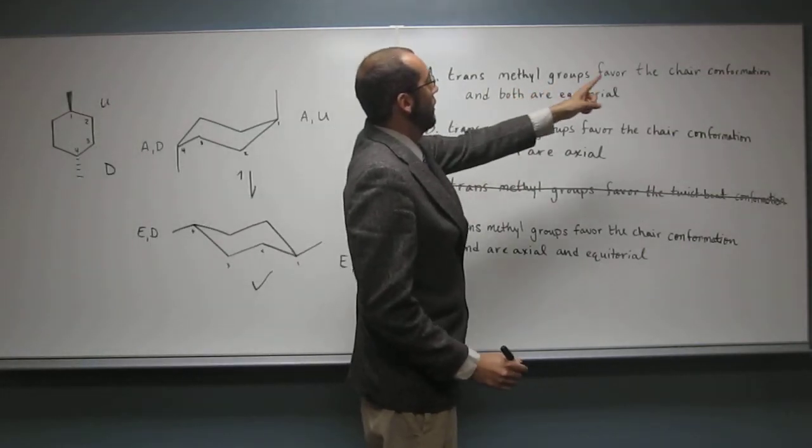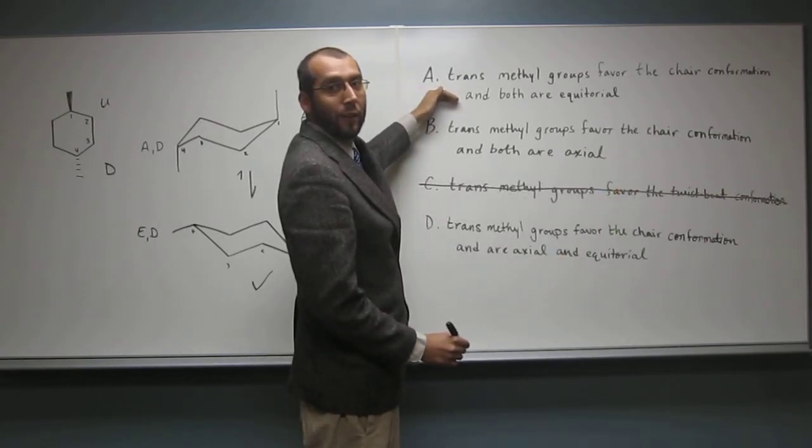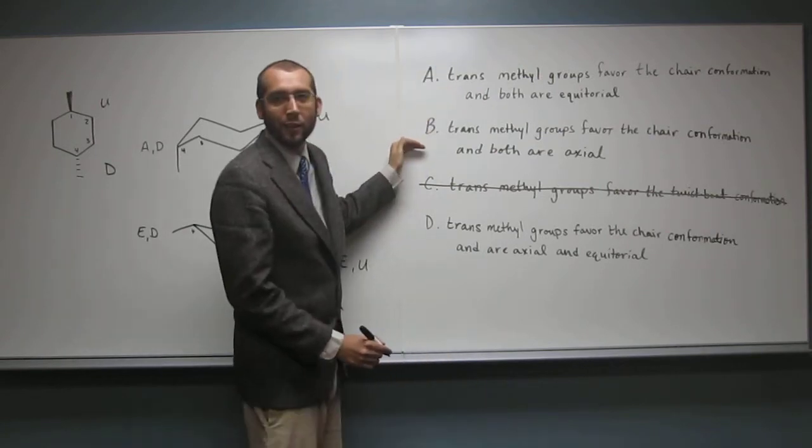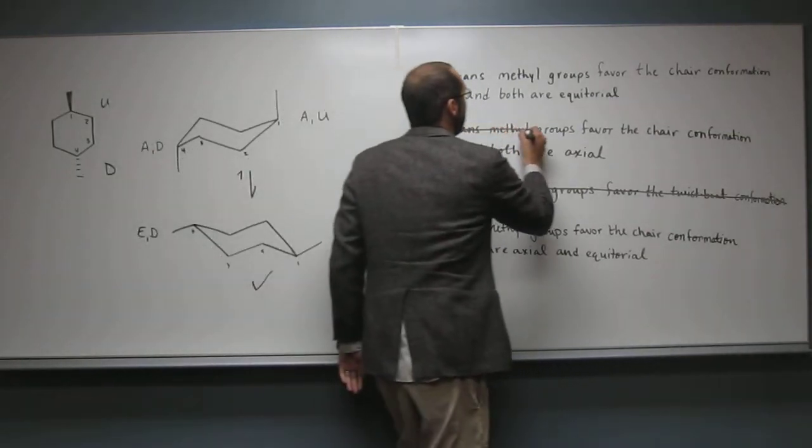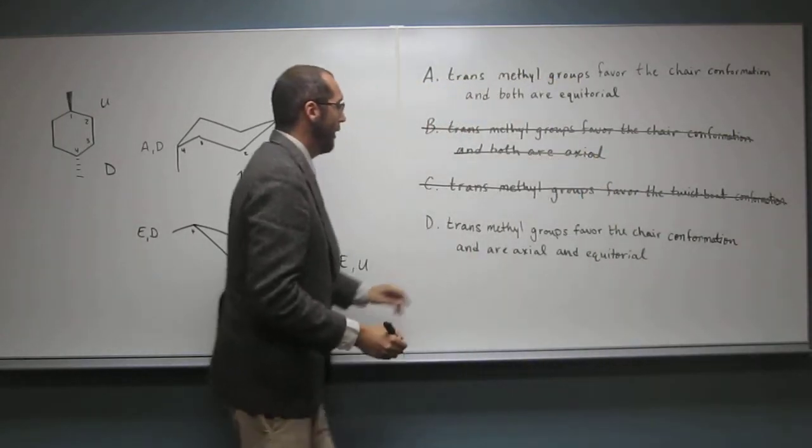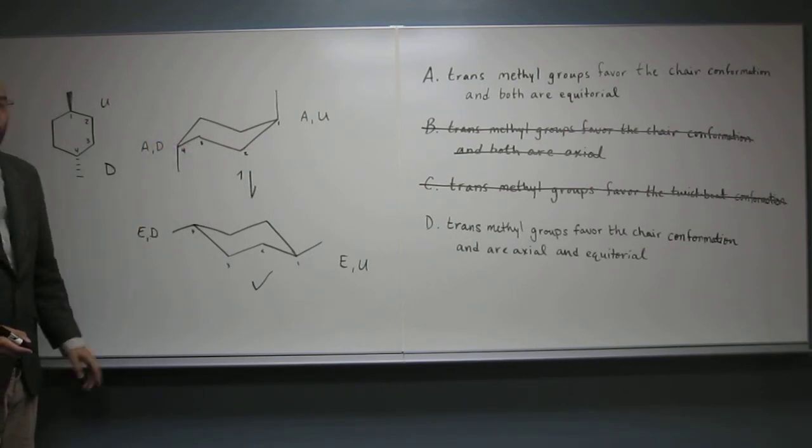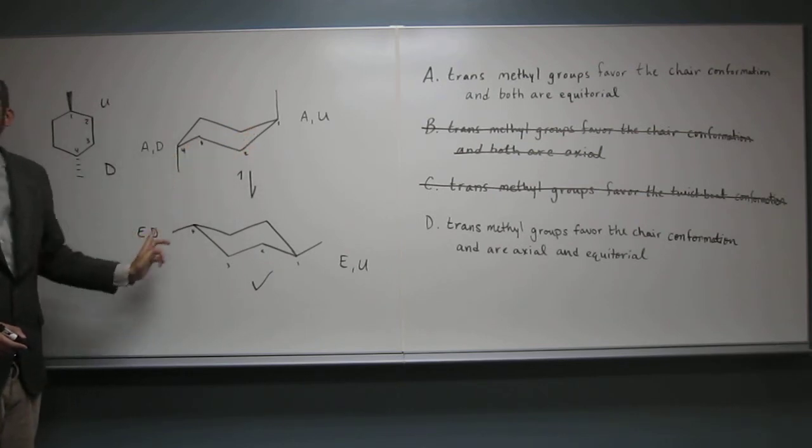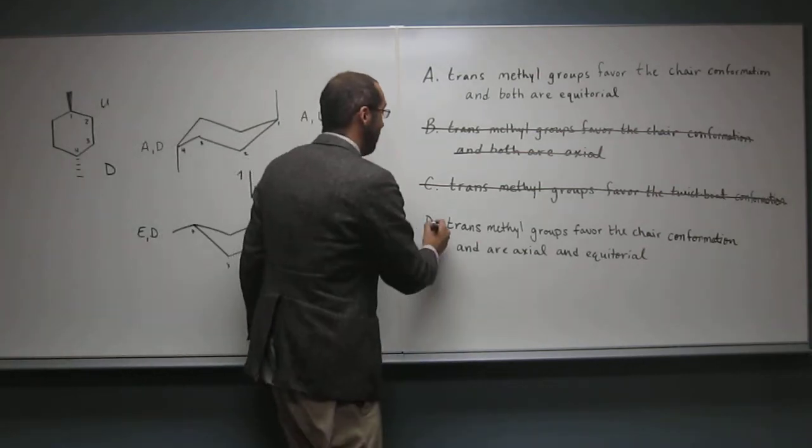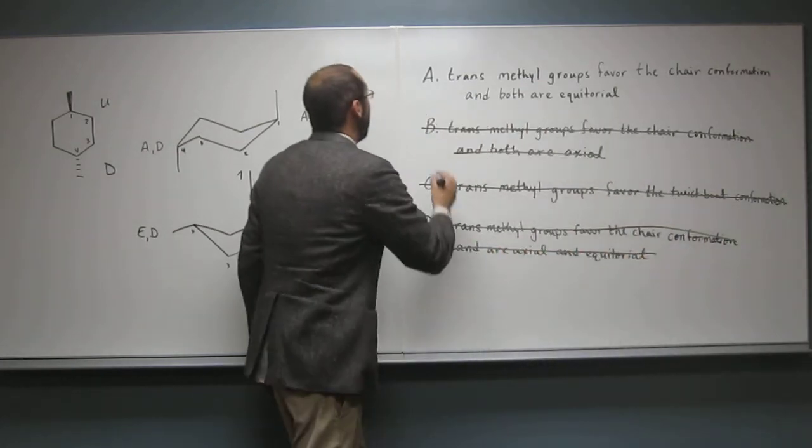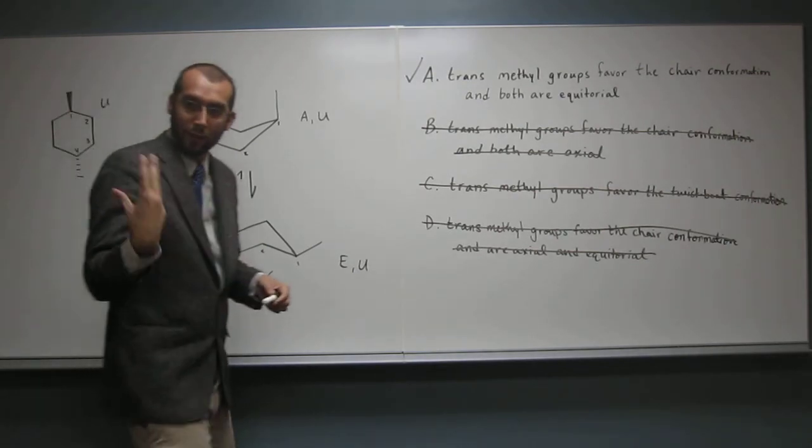So, trans-methyl groups favor the chair conformation. We got that. Both are equatorial. Is that the right answer? Yes. Yeah, that's the right answer. Well, let's just cancel out the other ones. Both are axial. Is that more favored? No, we already know they're not more favored, so let's cancel that one. And if you've got trans-1,4, can one be axial and one be equatorial? Look at what we've done here. They're either both axial or both equatorial, so they can't even be like this, right? One can't be axial and the other equatorial. So the right answer is that one. Are there any questions on this one? No questions. Okay, does it make sense? Yes. Okay, wonderful.